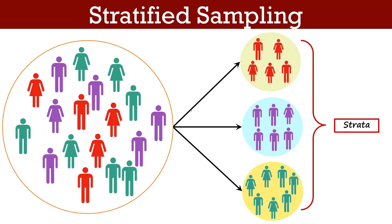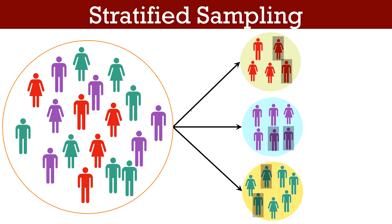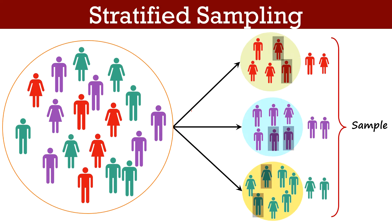Once the population is divided into suitable strata, the researcher makes use of simple random sampling to select the sample within each stratum. Individual stratum samples are then combined to obtain an overall sample for analysis. This process of dividing a heterogeneous population into relatively homogeneous groups is called stratification. Every member of the population should be in exactly one stratum.